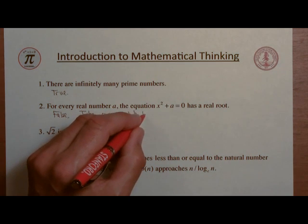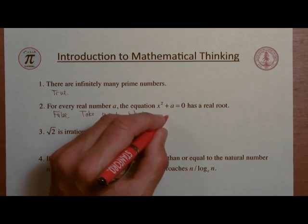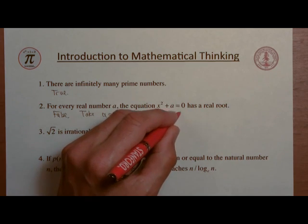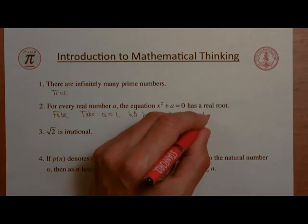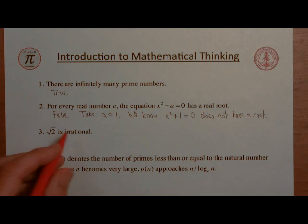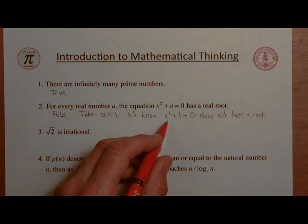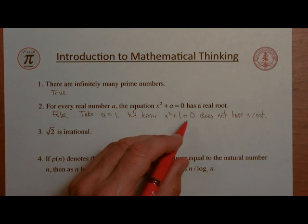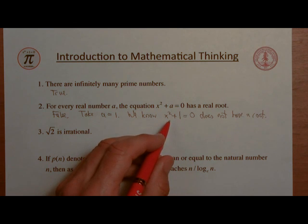Then we know that the equation x squared plus 1 equals 0 does not have a root, because there's no number that you can square, no real number that you can square, such that when you add 1 to it, you get 0.